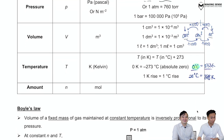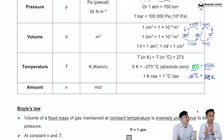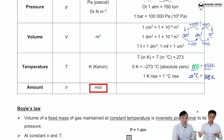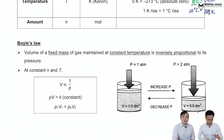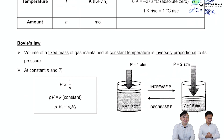Last but not least, we have amount — and amount always refers to number of moles. The SI unit for moles is just mol, m-o-l. Now we're going to take a look at all these physical quantities and how they relate to each other.